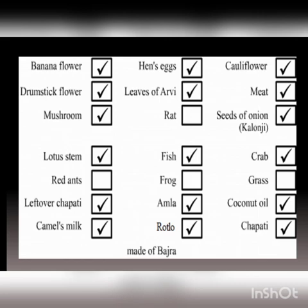Do you know that coconut oil is mainly used by people who live in the southern part of India? They mainly cook food in coconut oil. Fish, meat, and crab are mainly eaten by the people who live in the north and northeastern part of India.